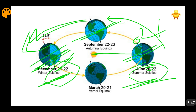December 21–22 will be the longest day in the Southern Hemisphere. When there is a longest day in the Northern Hemisphere on 21st June, it will be the shortest day in the Southern Hemisphere. Conversely, when the Sun is above the Tropic of Capricorn on 21–22 December, this becomes the longest day in the Southern Hemisphere and the shortest day in the Northern Hemisphere.